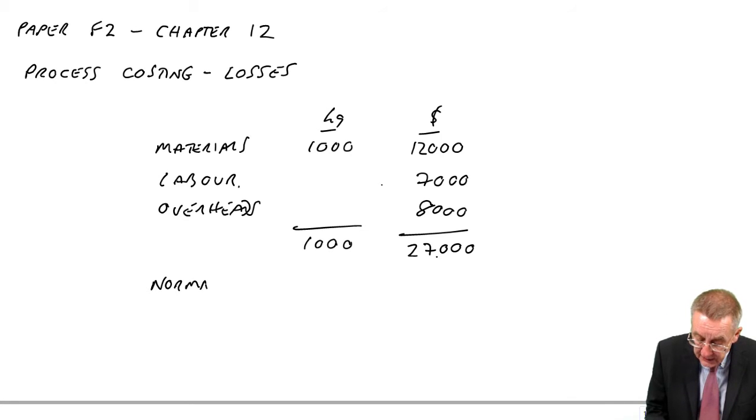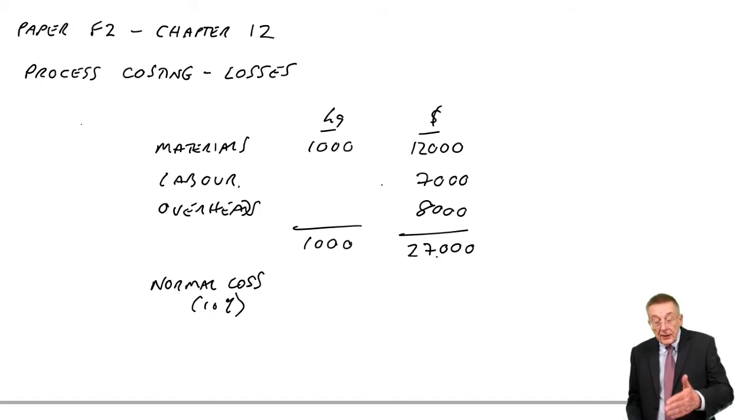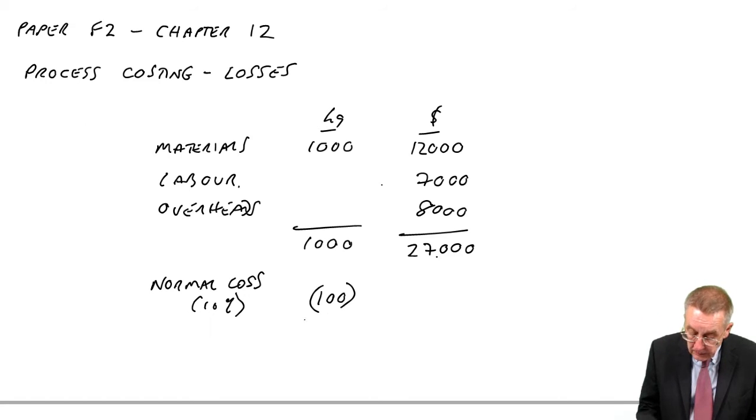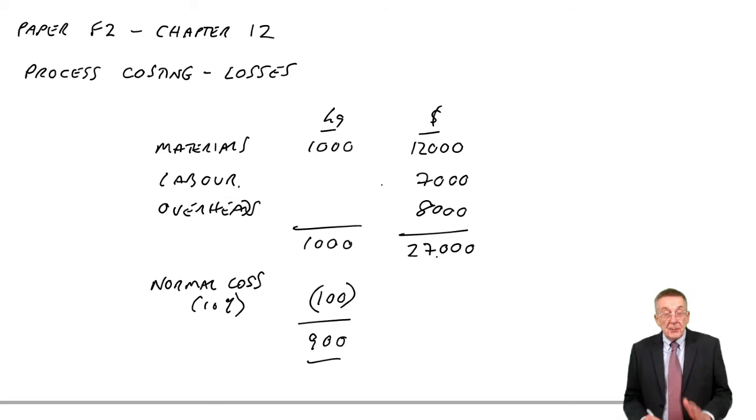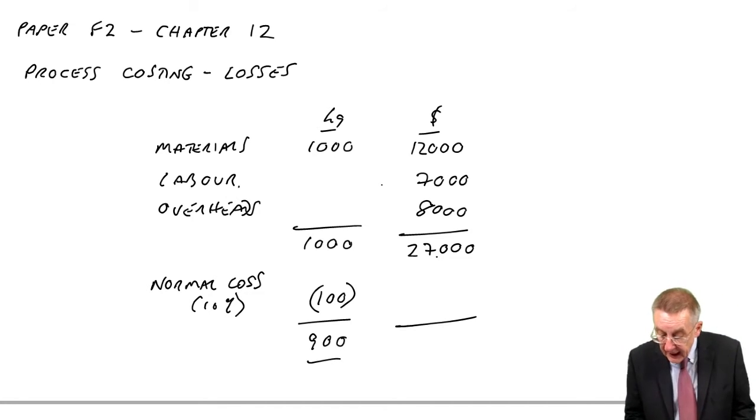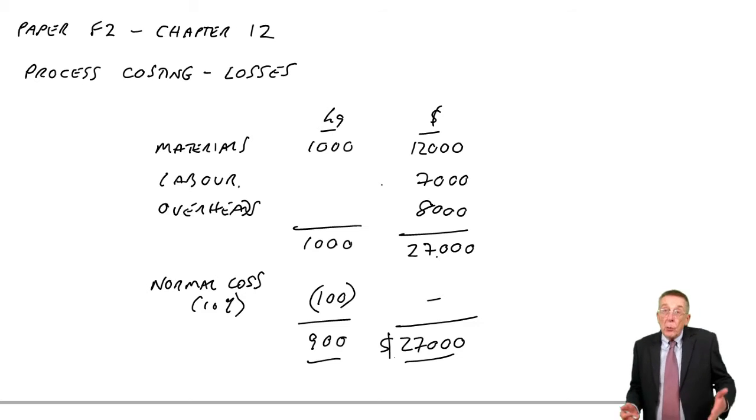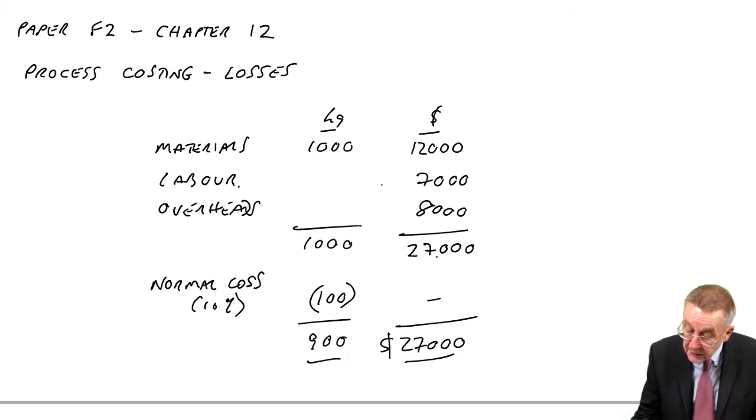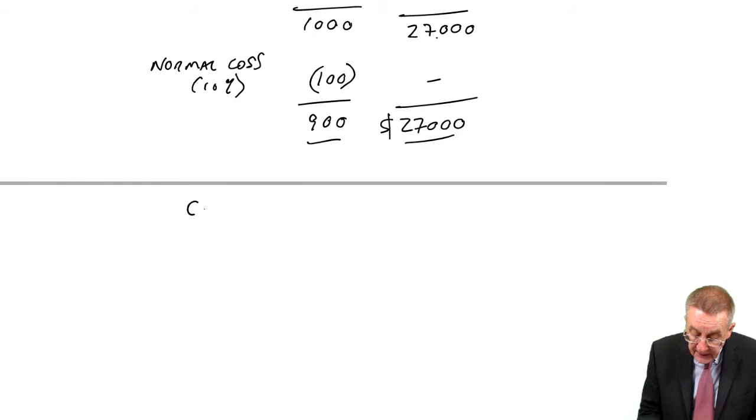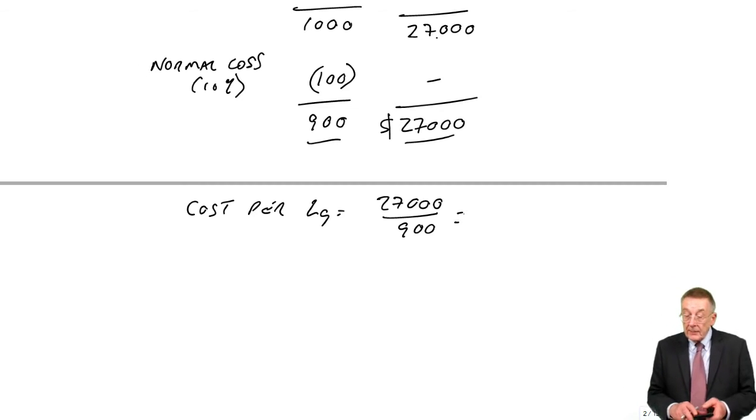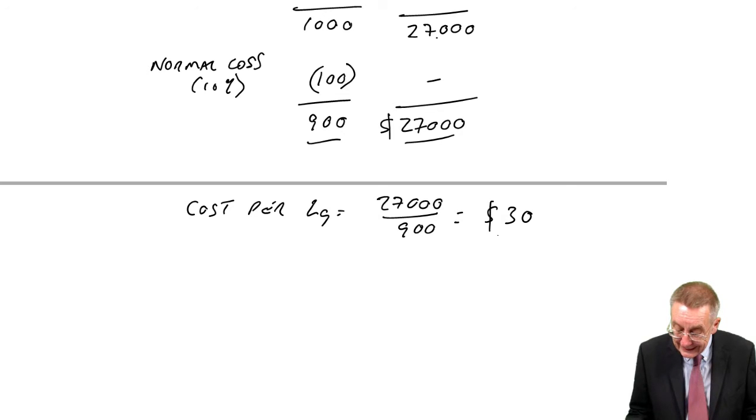So what do we do? Let's do our costings first of all as a little statement. We put in materials: 1,000 kilos, cost 12,000. In addition, labor 7,000, and overheads 8,000. So at that stage we've put in 1,000 and the total cost is 27,000. But it's a bit silly to divide and say it's 27 a unit because we know from the beginning we don't expect to end up with 1,000 kilos at all. We expect to lose 10%.